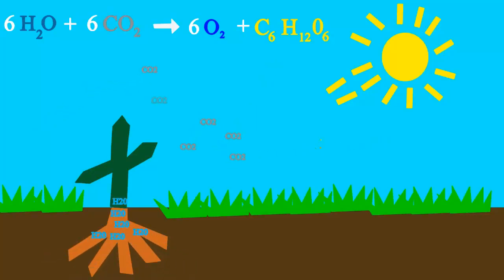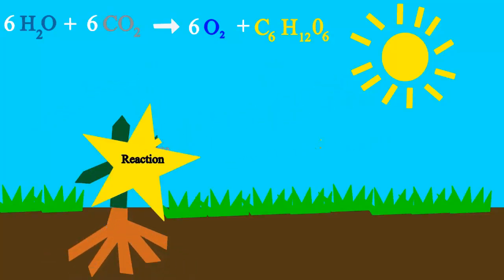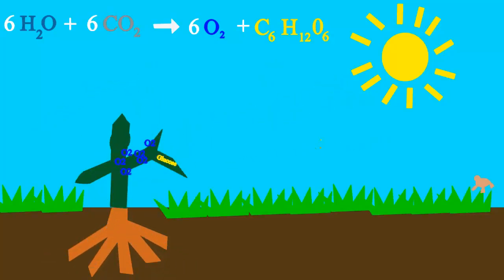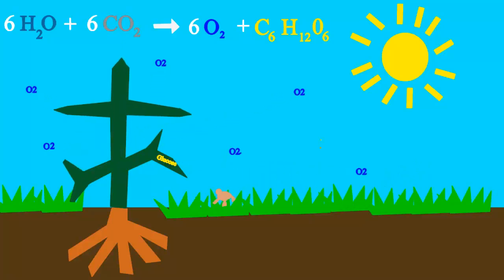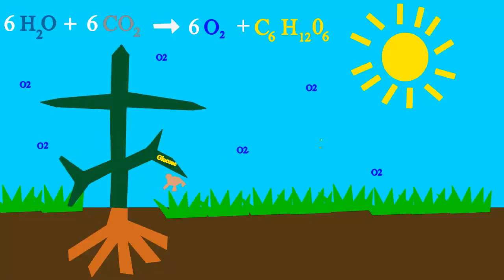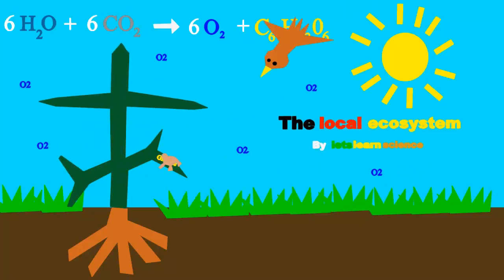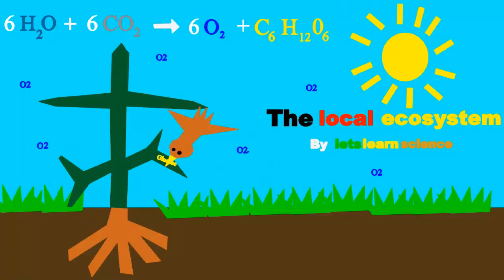Plants take water, sun, and CO2 to make glucose, the sugar that they use for food. They also put oxygen into the air so we can breathe, because oxygen is everywhere.